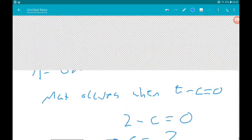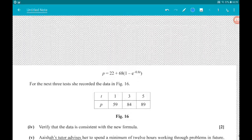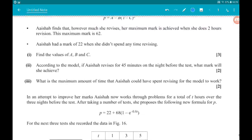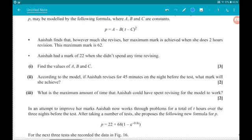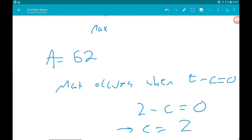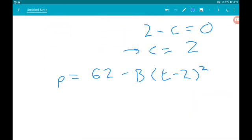So now we know P is equal to 62 minus B times t minus 2 squared. Now, to find B, we use the other bit of info. We also know Asha had a mark of 22 when she spent no time revising. So when t is equal to 0, P is equal to 22.